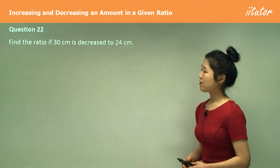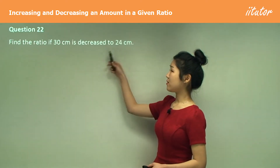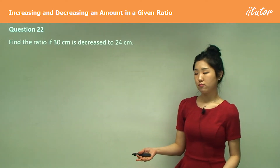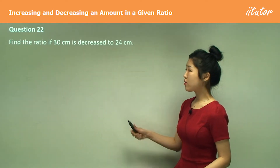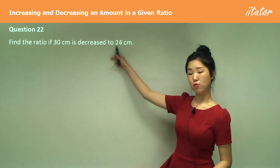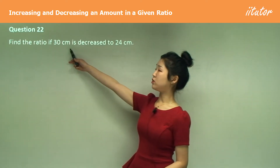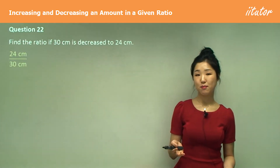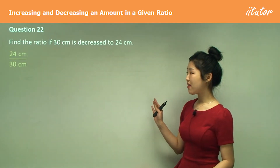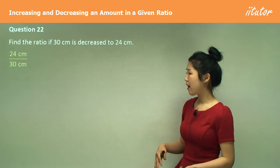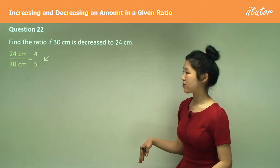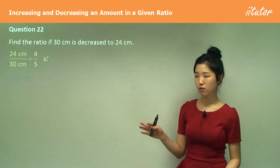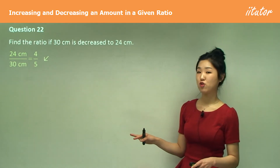Question 22: find the ratio if 30 centimeters is decreased to 24 centimeters. The new amount is 24 and the original amount is 30. So write 24 centimeters over 30 centimeters and simplify. Divide top and bottom by 6 to get 4 on 5. Don't put the units — ratios don't have units.